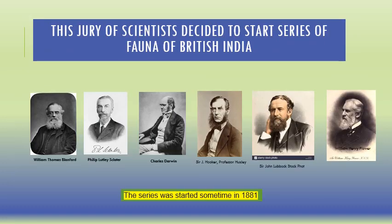The Fauna of British India including Ceylon and Burma is a series of scientific books published by the British government in India and printed by Taylor and Francis of London. The series was started somewhat in 1881 after a letter had been sent to the Secretary of State for India, signed by Charles Darwin, Sir Joseph Dalton Hooker, and other eminent men of science.